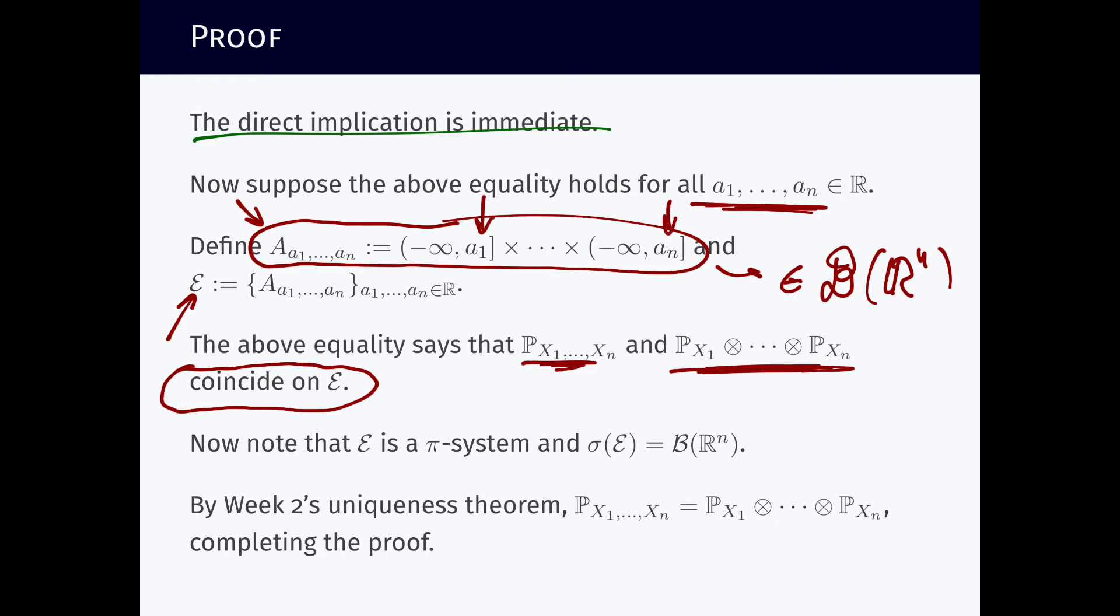And now to conclude, the conclusion is very simple. With all these tools that we have at hand so far, there's not much to do. This collection is a pi system, isn't it? It is a pi system. They generate the set of Borel sets of R^n.